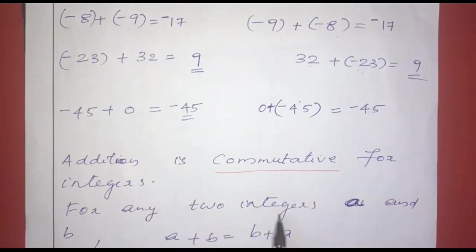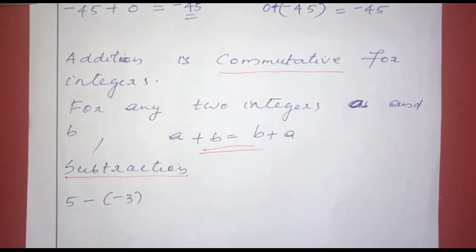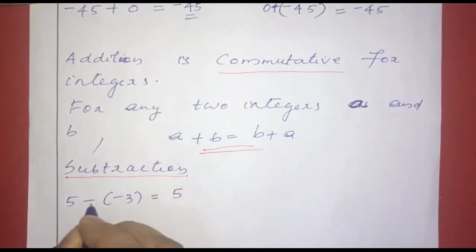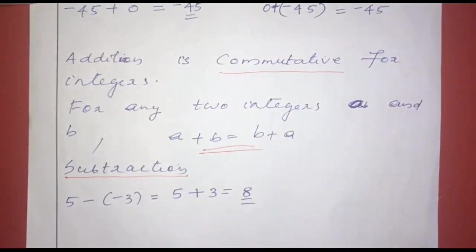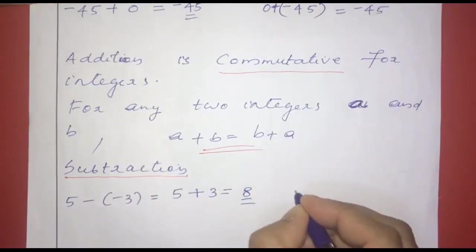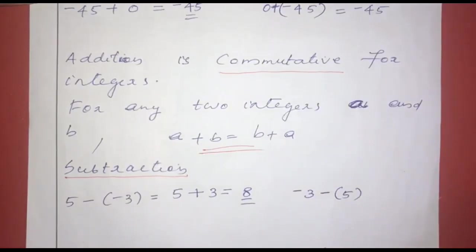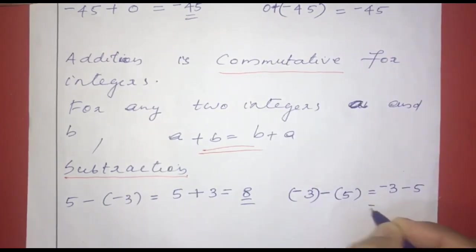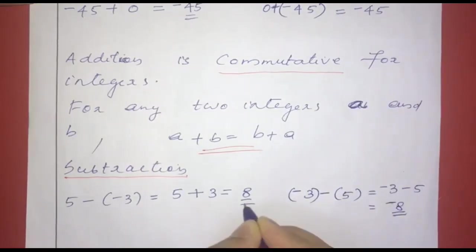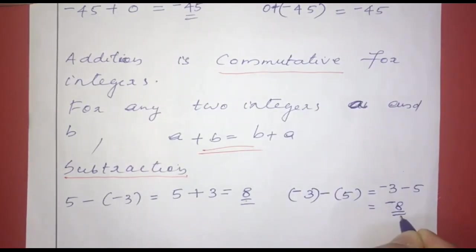For any two integers a and b, a plus b equals b plus a. Now for subtraction: negative 5 minus negative 3. Negative of minus is positive, so negative 5 plus positive 3 equals negative 2. Reversing: negative 3 minus positive 5 equals negative 8. Since negative 2 is not equal to negative 8, a minus b is not equal to b minus a.